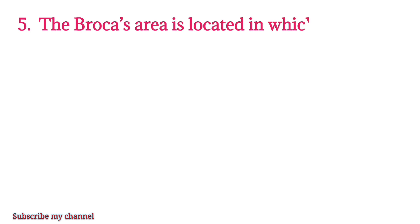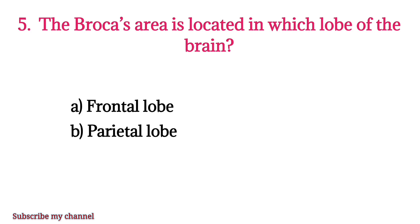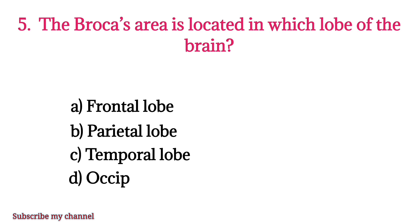MCQ number five: The Broca's area is located in which lobe of the brain? Option A: frontal lobe, option B: parietal lobe, option C: temporal lobe, option D: occipital lobe. The right option is option A.